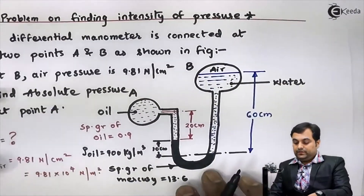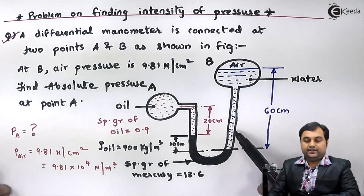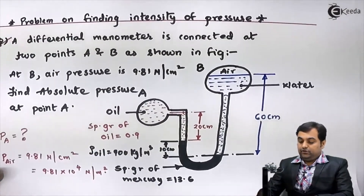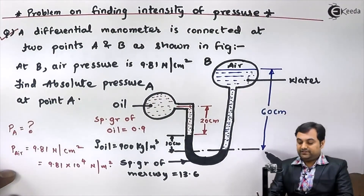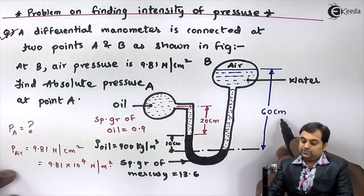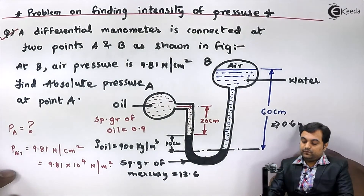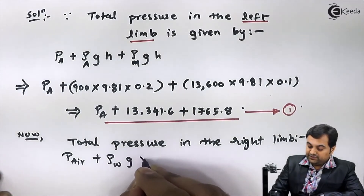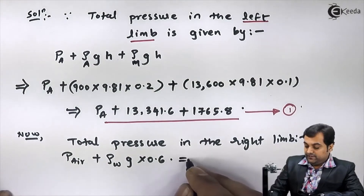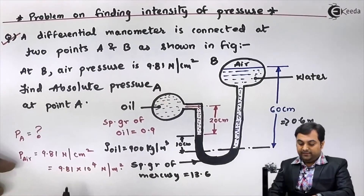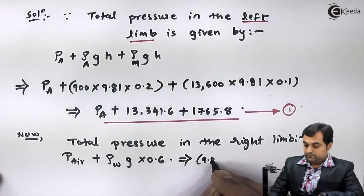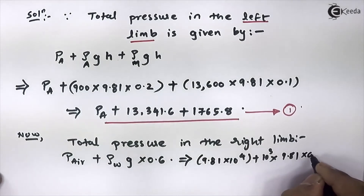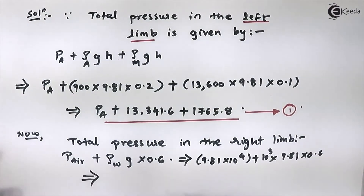In the right limb we have only air and water — no mercury. So the pressure is: P_air plus the pressure of water. Water is up to a height of 60 centimeters from the datum, which is 0.6 meters. We write: rho_water × g × 0.6. Substituting: P_air = 9.81 × 10⁴, plus density of water = 1000 × 9.81 × 0.6.